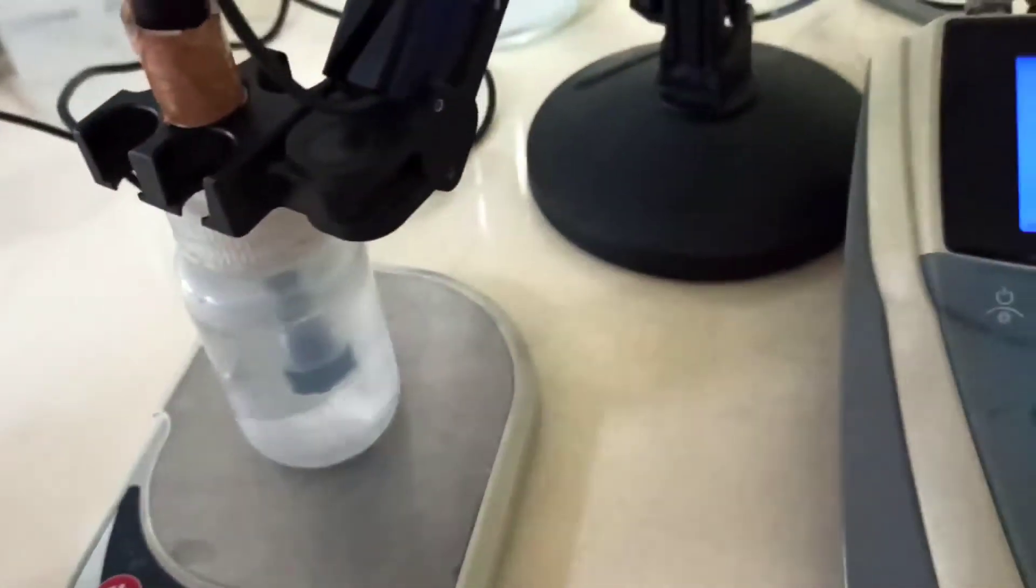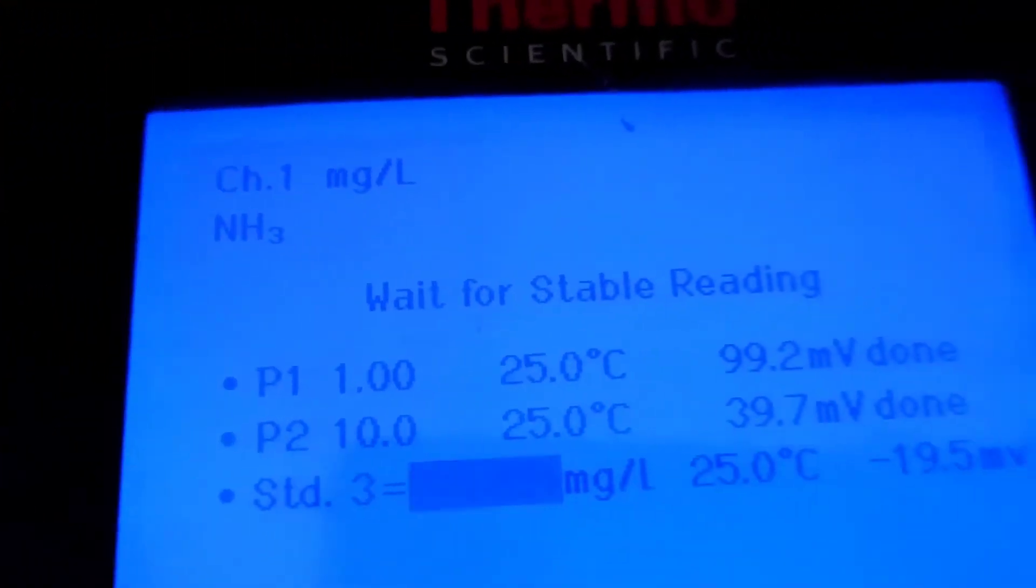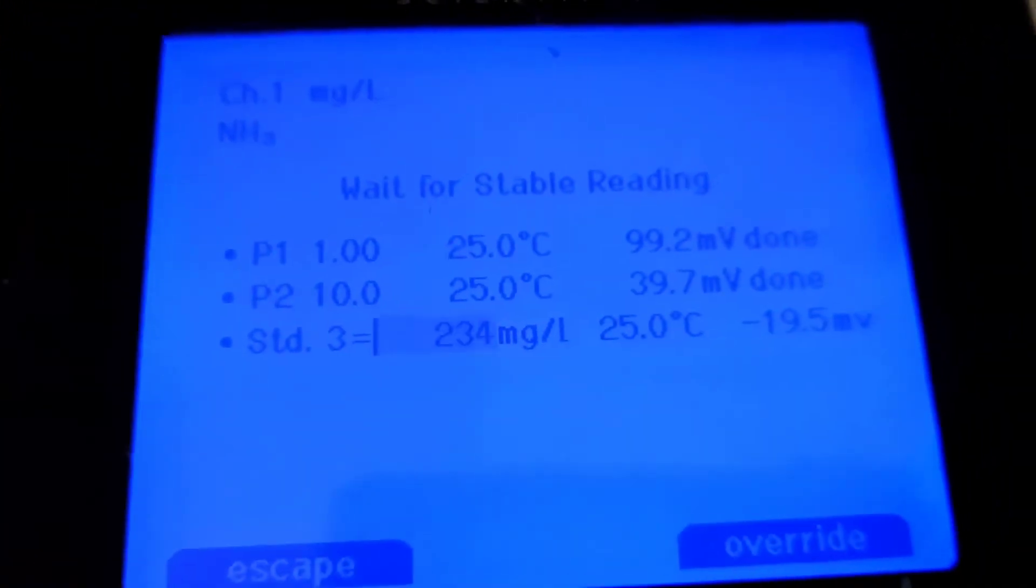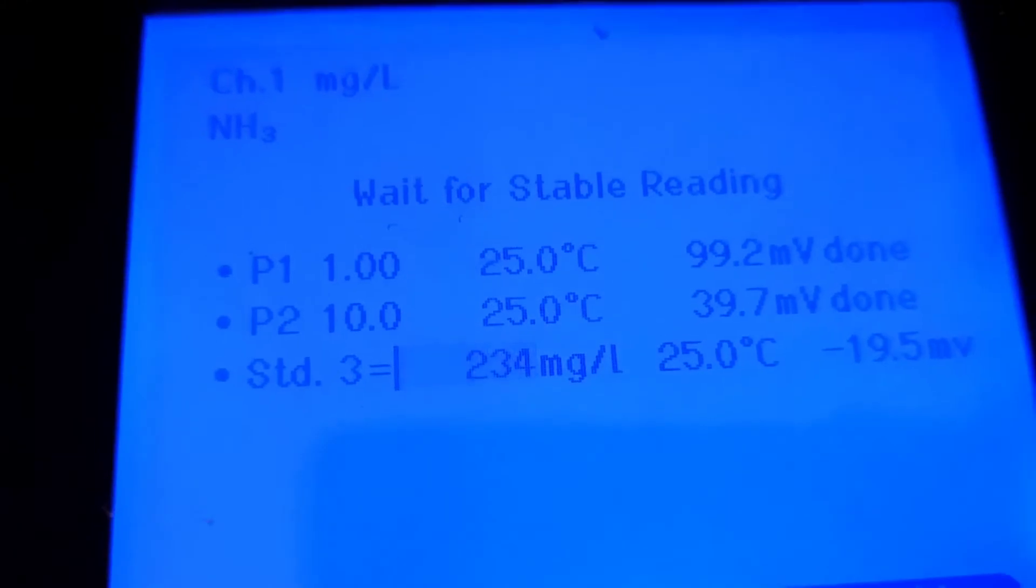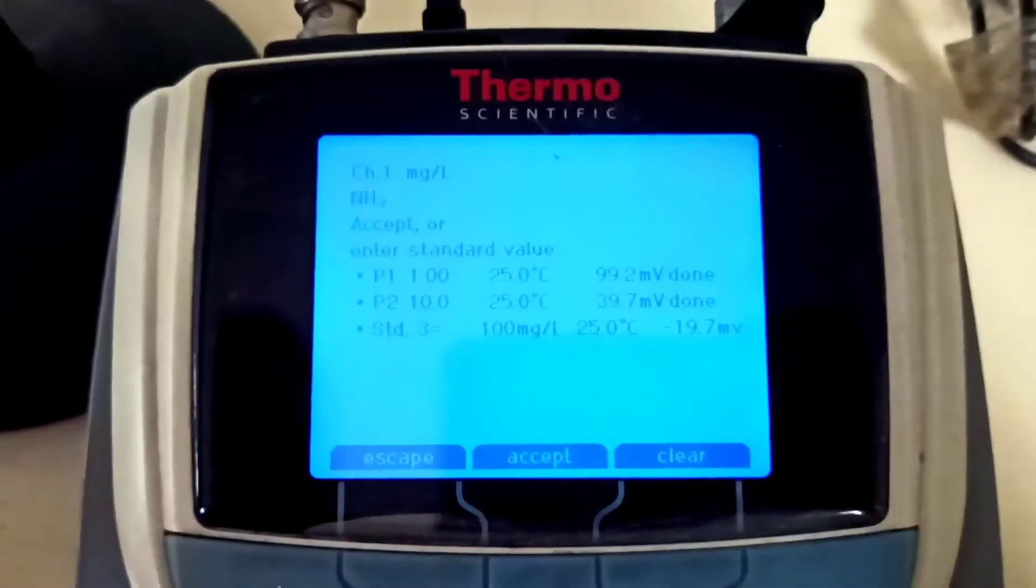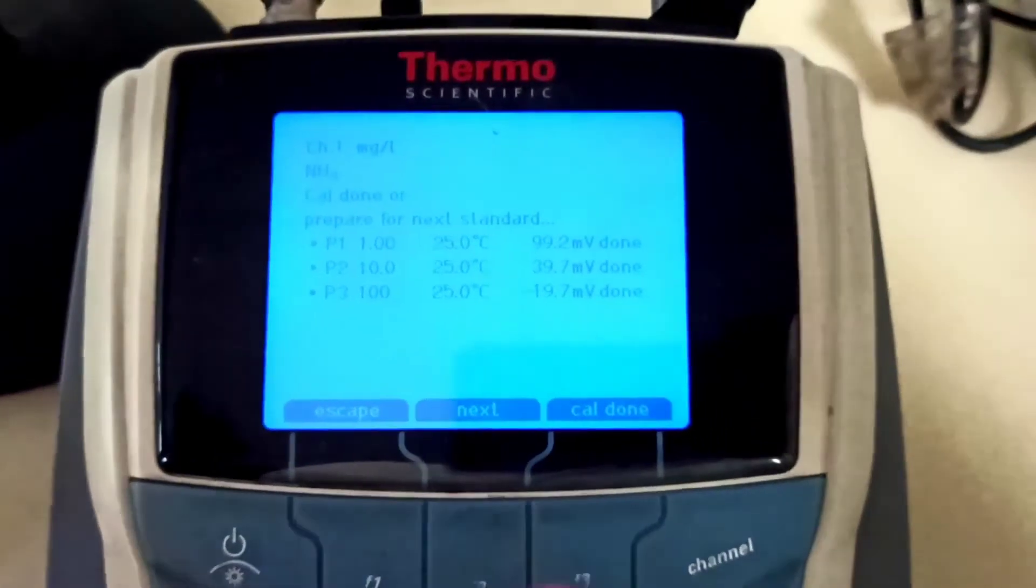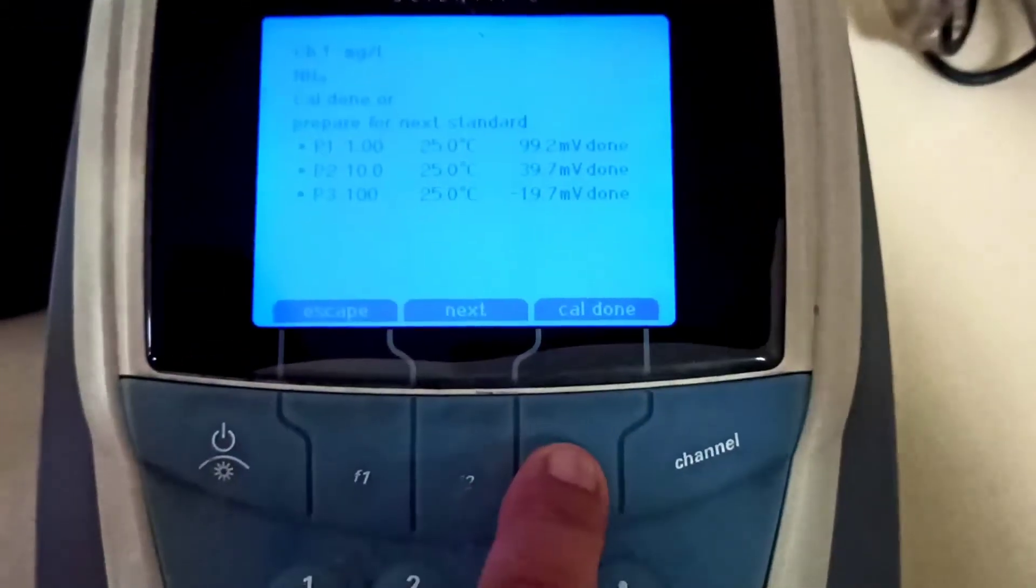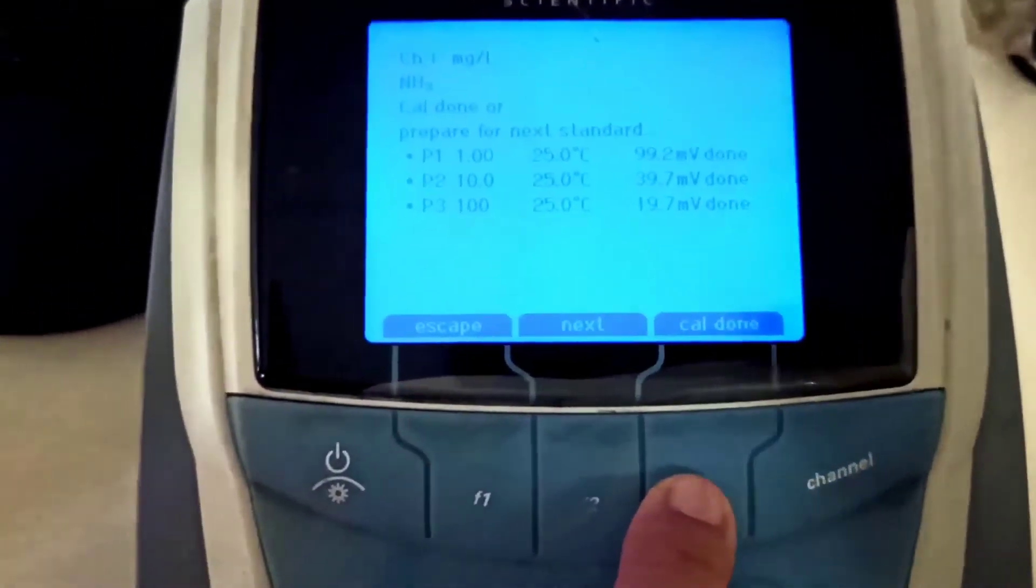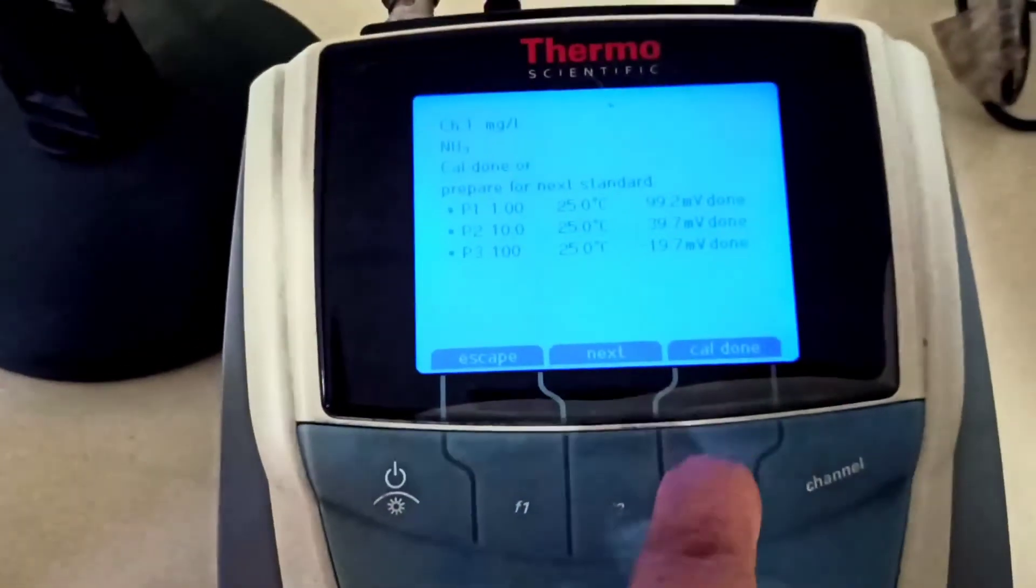Now move to the third standard. It takes too much time, 100 ppm. Now we get this result: minus 19.5 millivolt. We now overwrite and enter 100 ppm. We have taken three points and press F3 for calibration done.